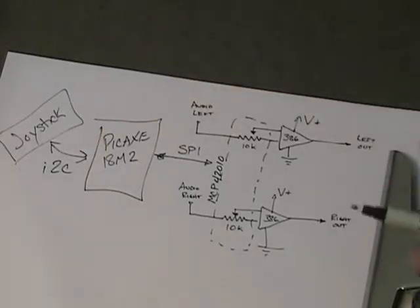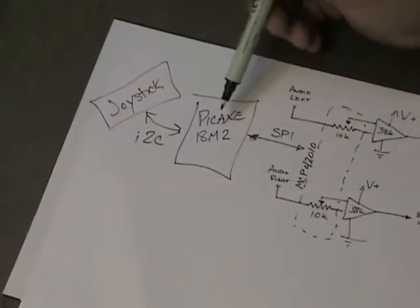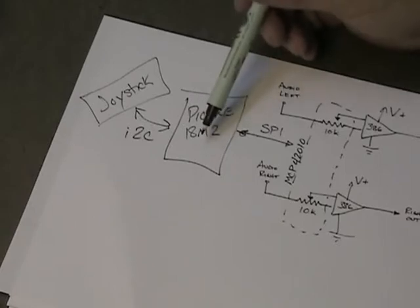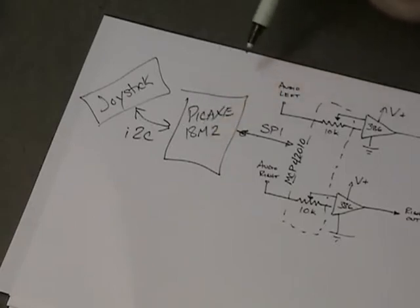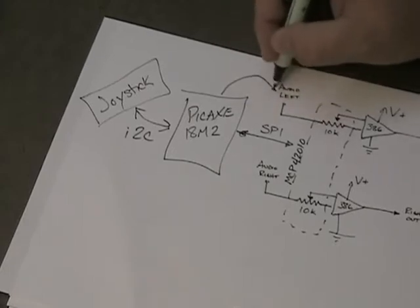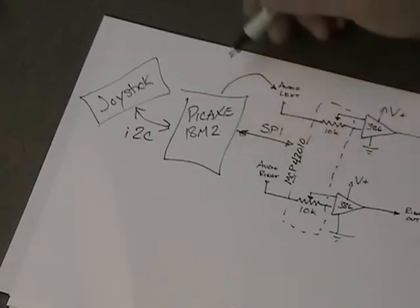One other thing I'm going to do is I'm going to have a frequency generator on the Pickaxe and use pulse width modulation, the PWM out commands out of the Pickaxe and through a passive filter, just a capacitor and a couple of resistors to feed in to the audio signal. So this gives us some tone generation on the Pickaxe as well.